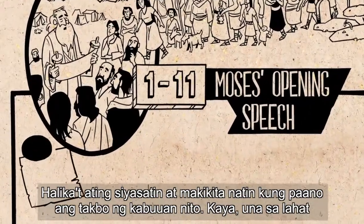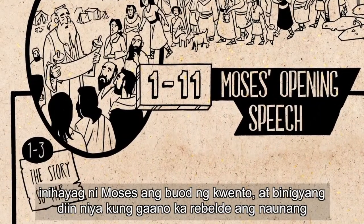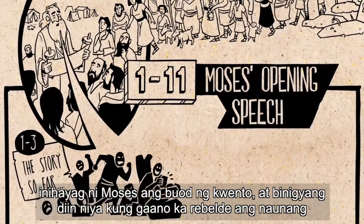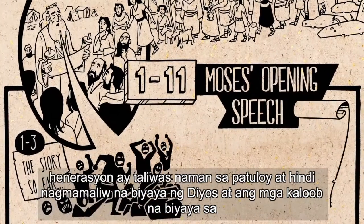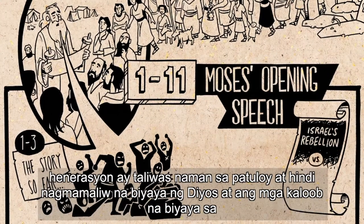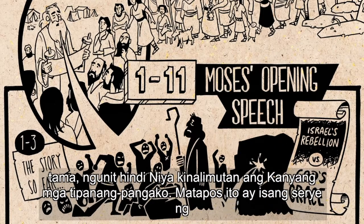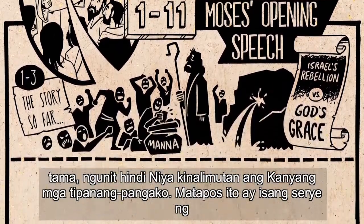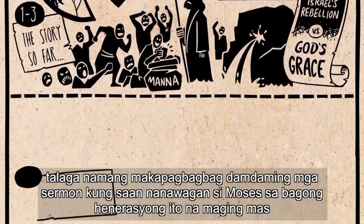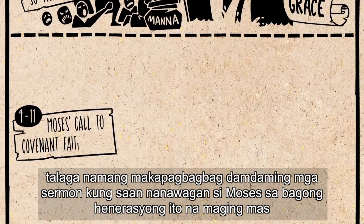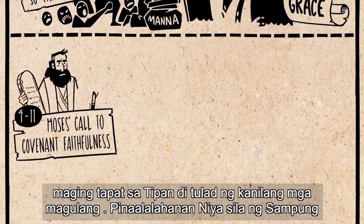Moses first summarizes the story so far, highlighting how rebellious the previous generation was in contrast with God's constant grace and provision in the wilderness. God did bring his justice on them, but he did not abandon his covenant promises. After this comes a series of very passionate sermons where Moses calls on this new generation to be more faithful than their parents were to the covenant.